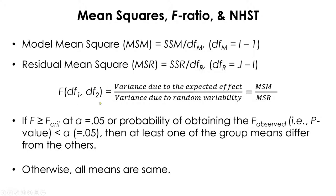We have two degrees of freedom: DF1 is the model degrees of freedom, and DF2 is the residual degrees of freedom. The numerator is the model mean square (MSM) and the denominator is the residual mean square (MSR). If the F-ratio is greater than the critical F at alpha 0.05, or if the p-value is less than 0.05, then at least one group mean differs from the others. Otherwise, all means are considered statistically the same.